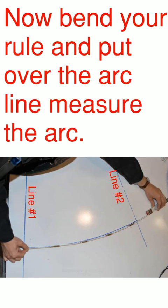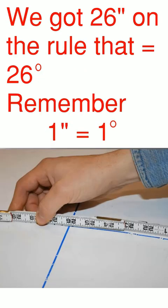Now bend your roll and put over the arc line and measure the arc. It should look like such. Now with your rule connecting line one and line two. Put it over the arc and we got 26 inches on that roll. That equals 26 degrees because remember one inch on that arc equals one degree. This is golden.